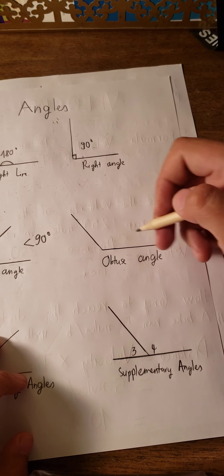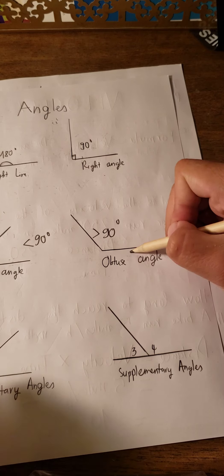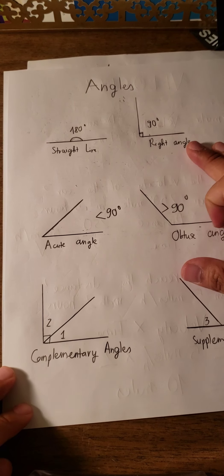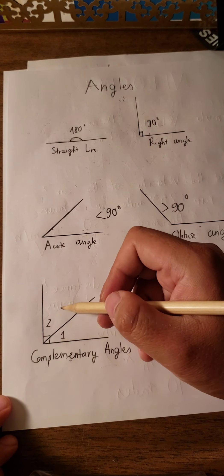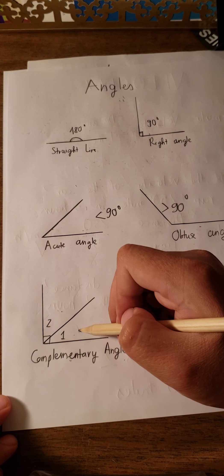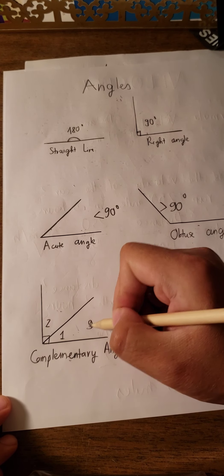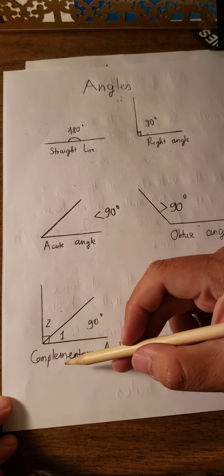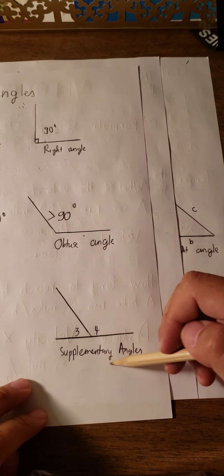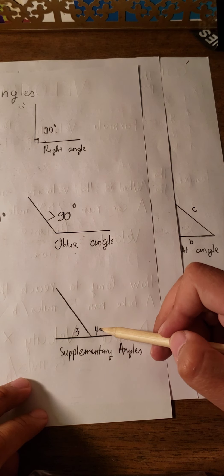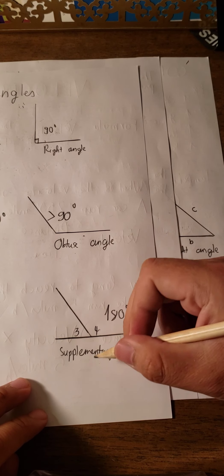An obtuse angle means the degree is higher than 90 degrees — that's why we call it an obtuse angle. Complementary angles means two or more angles that sum together to create 90 degrees. Supplementary angles means two angles that sum together to create 180 degrees.